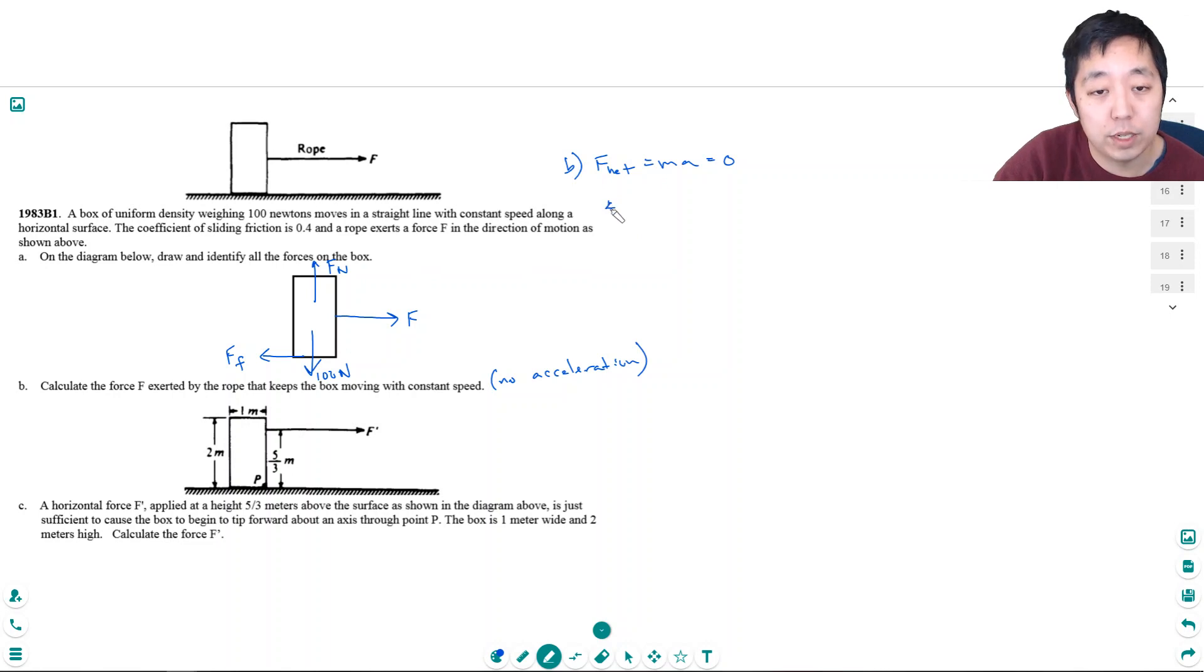So what are the net forces? Well, the most important thing is both x and y direction end up at zero. First of all, in the y direction, I would say the normal force has to equal gravity, the force of gravity, which is 100 newtons. In the x direction, F has to equal the force of friction. Now that has to equal mu times the normal force, and mu is 0.4 and the normal force is 100 newtons.